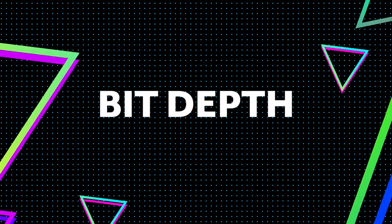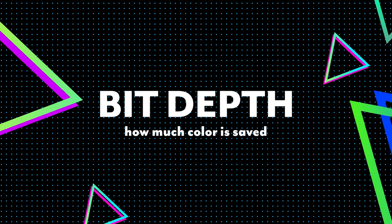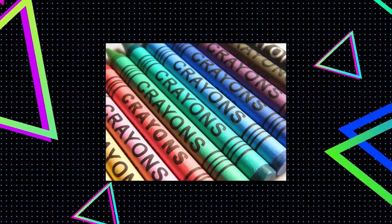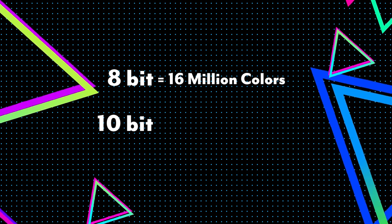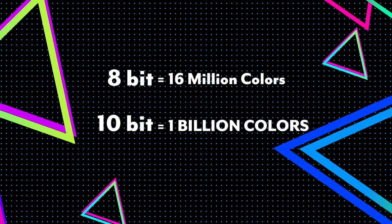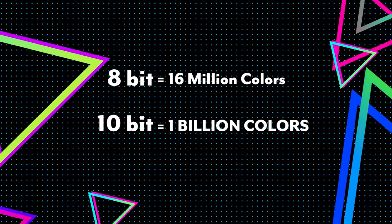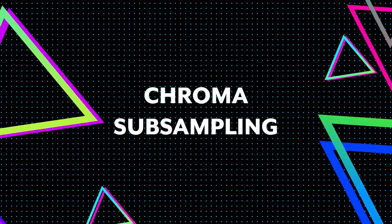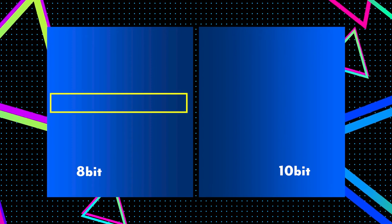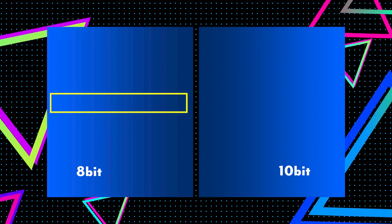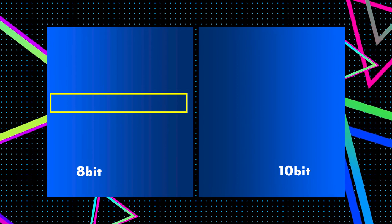The next aspect to remember with codecs is bit depth — how much color is saved, or better yet, how big is the crayon box? The most common bit depths are 8-bit and 10-bit. 8-bit has 16 million colors, which sounds like a lot, but when you jump up to 10-bit, that's a billion colors. This factor has the most impact on color grading. It's a process called chroma subsampling. You can see here an example of what that looks like — the image on the left is an 8-bit image and the image on the right is 10-bit, and you can see the banding happening on the image on the left.